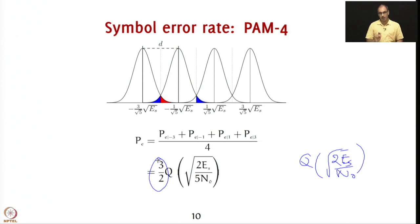In this lecture we have seen symbol error rate probabilities for BPSK and PAM-4. We have seen how to compute the energy of the constellations and how to draw the decision boundaries correctly in order to compute the symbol error rates. In the next lecture, we will extend the same concept to quadrature amplitude modulation and other constellations, and look at bit error rate as well. Thank you.